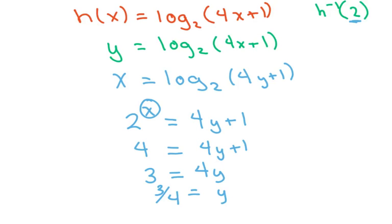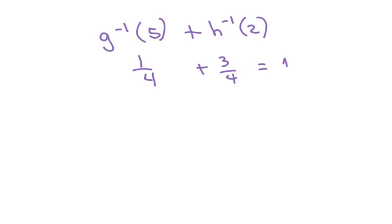All right. Now, therefore, this equals 3 fourths. We are supposed to add the inverse of g at 5 which was 1 fourth plus the inverse of h at 2 which was 3 fourths. And that equals 1.